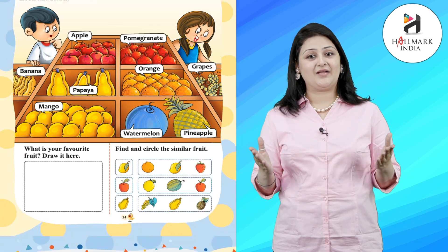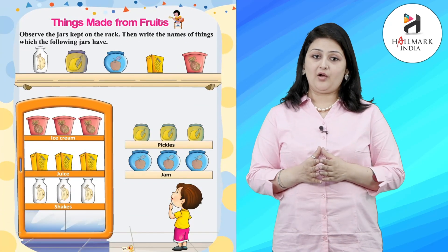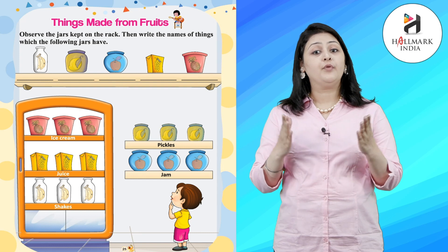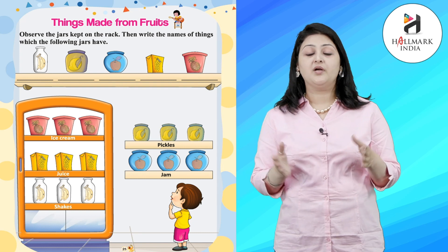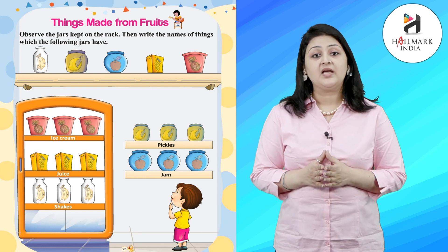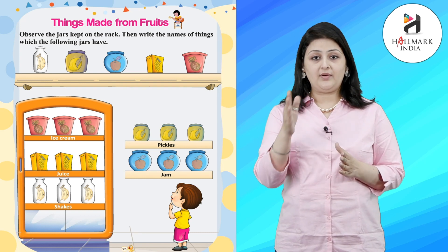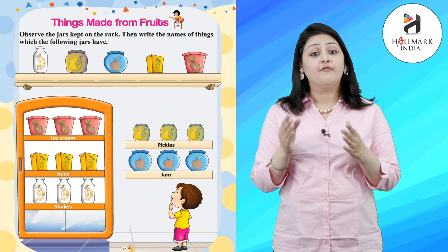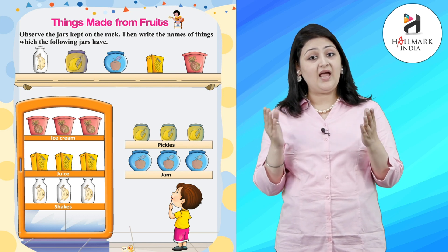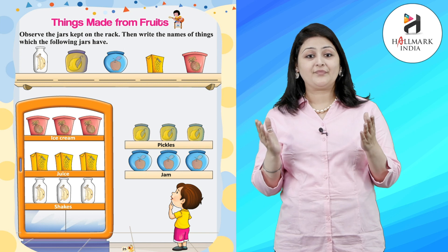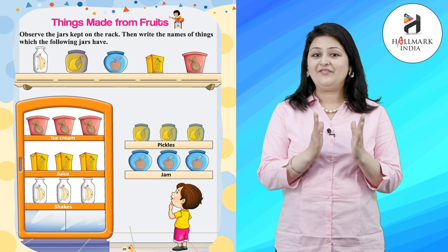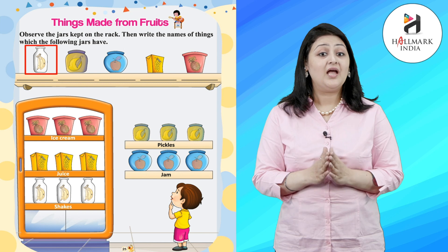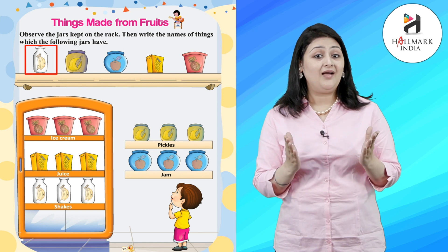You all are amazing. Now, we will learn the things made from fruits. Observe the jars kept on the rack. Then, write the name of the things which the following jars have. Let's see the first jar — the first jar has bananas.